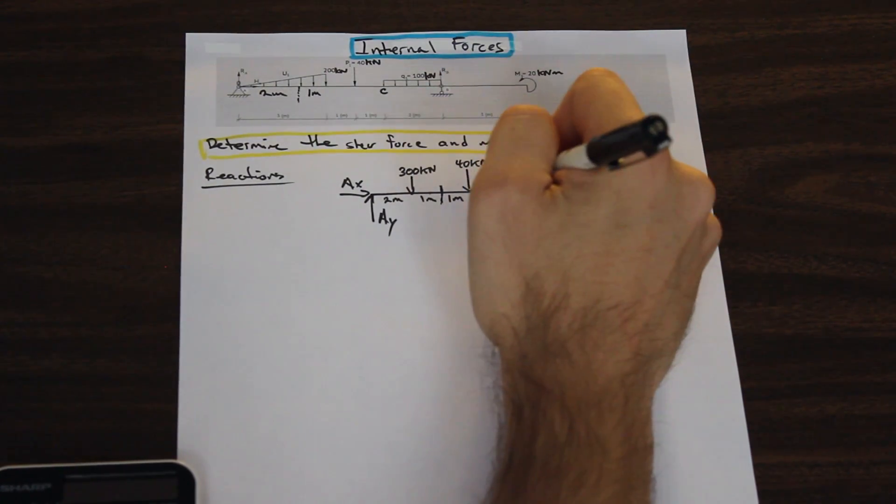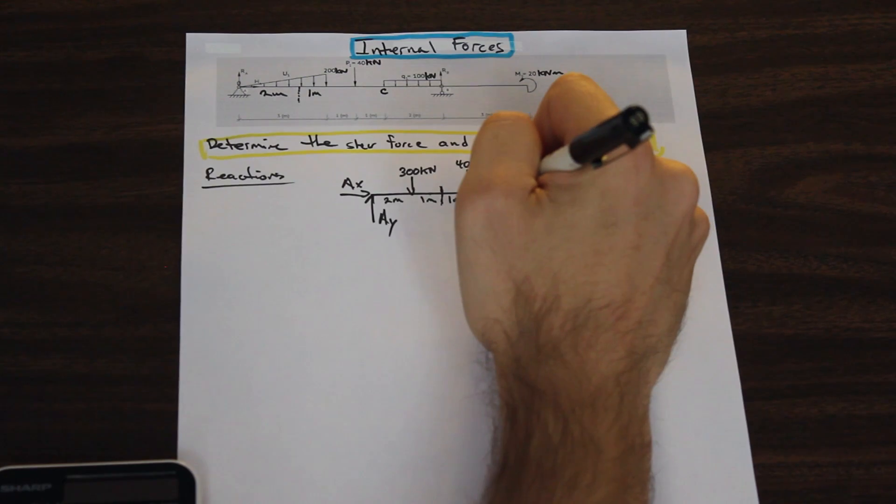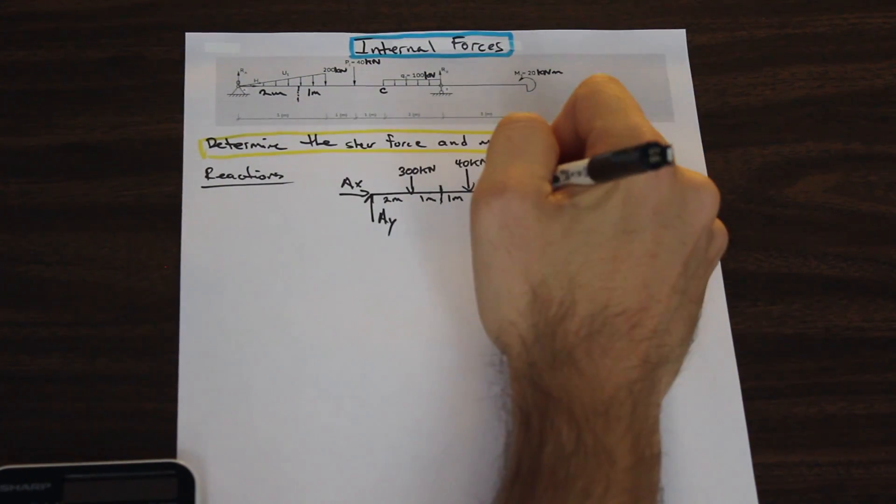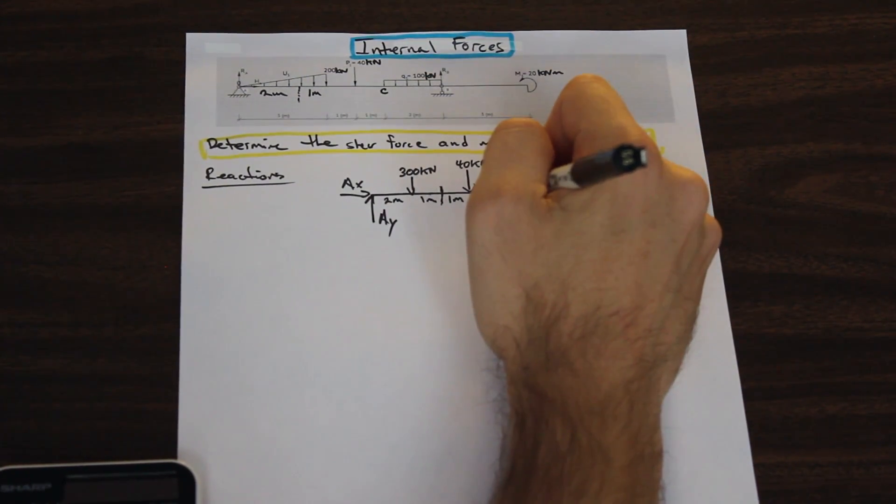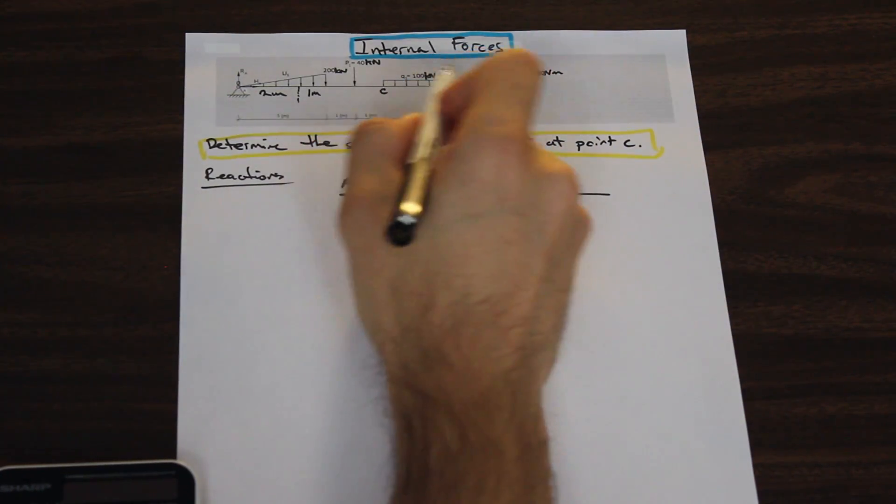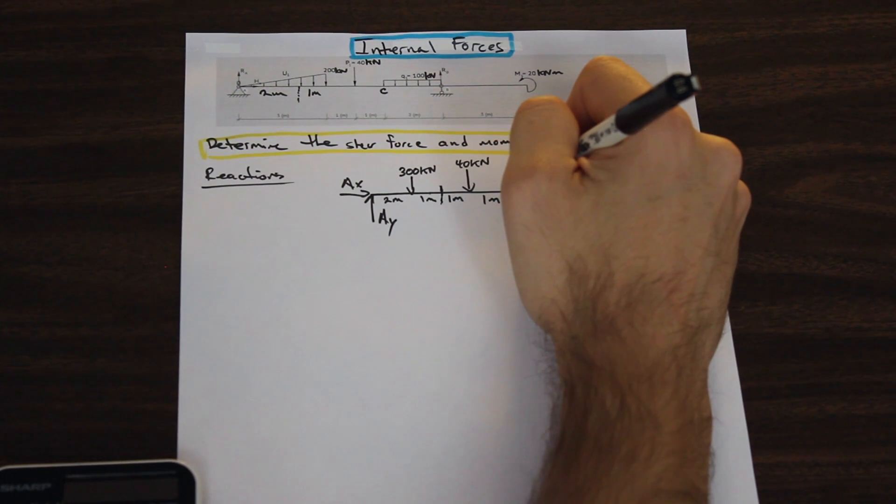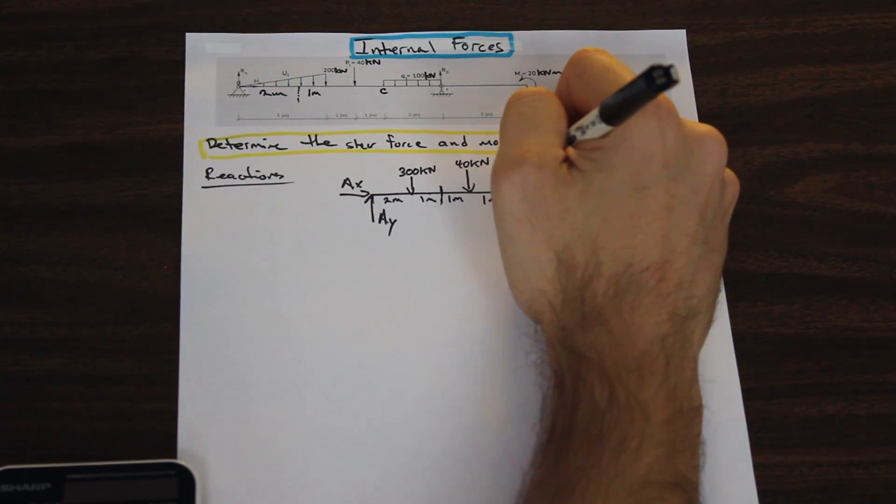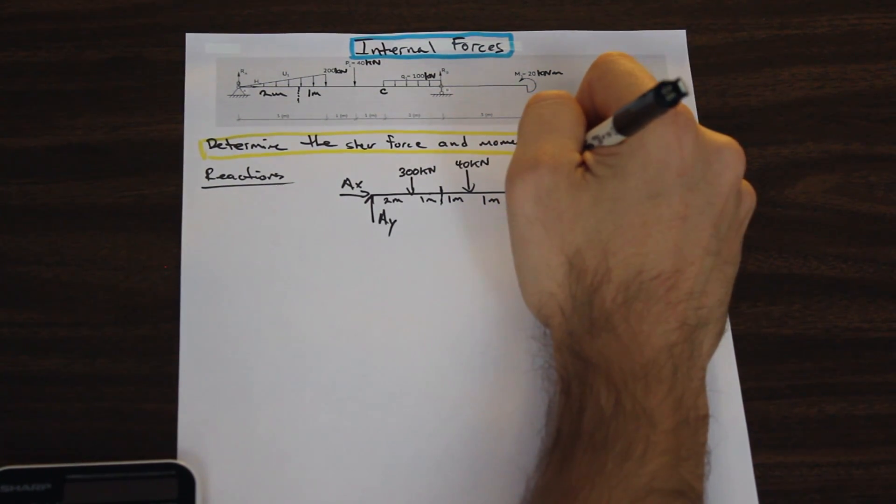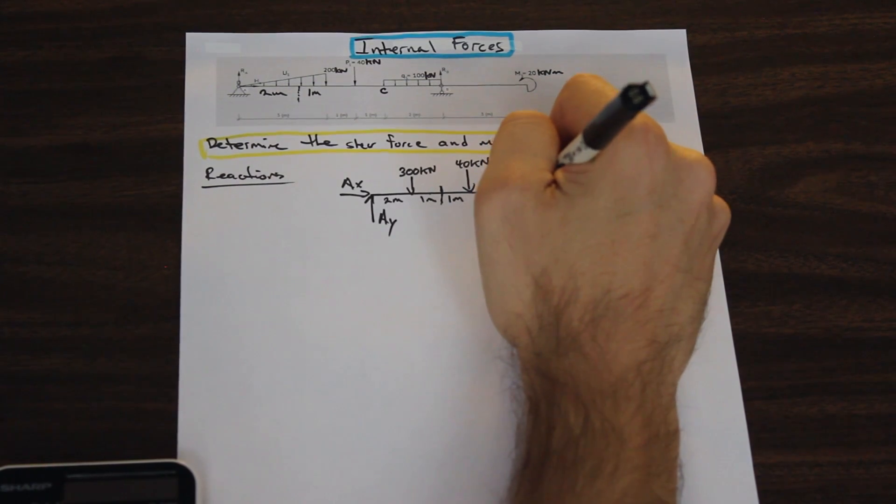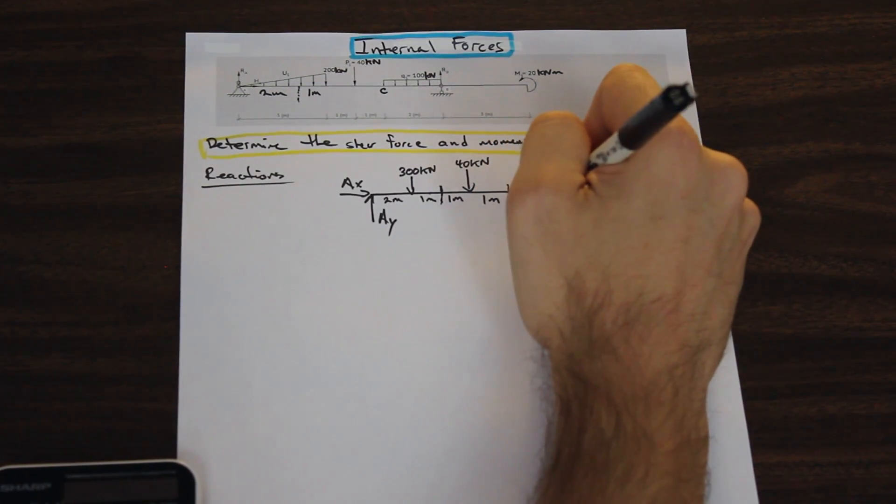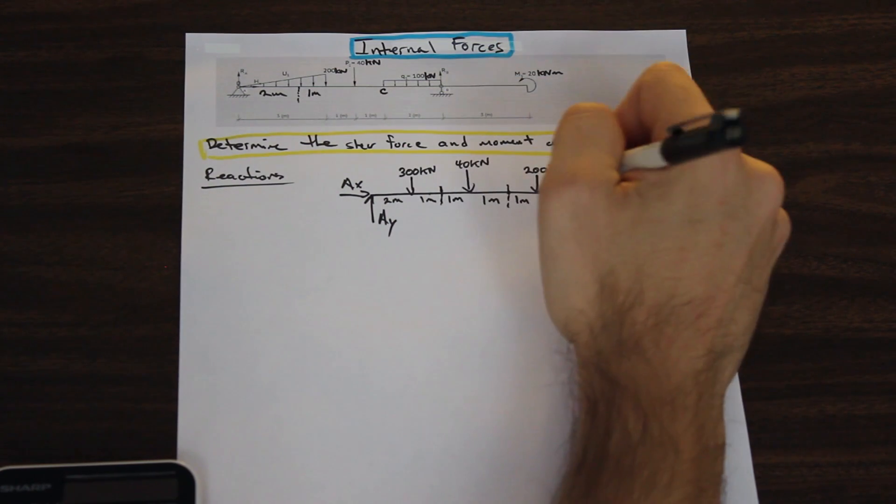Now we have 1 more meter over to this point C. At point C, we have 100 kilonewton force over a 2 meter distance. So that's going to be 200 kilonewton acting down. That's 1 meter and 1 meter. Perfect. And now we have point B. So at point B, we're going to have a reaction.